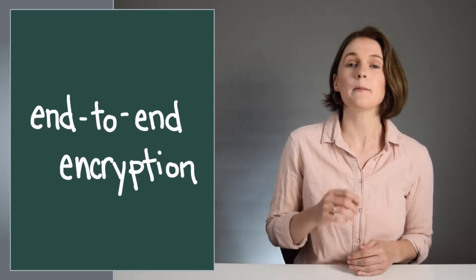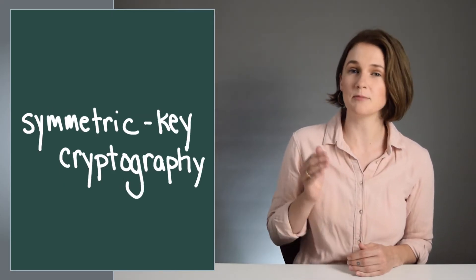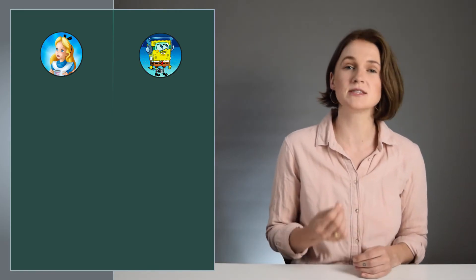Well, a bunch of ways, but usually it's something called symmetric key cryptography, which means that both Alice and Bob, the two parties in the conversation, have the same key.